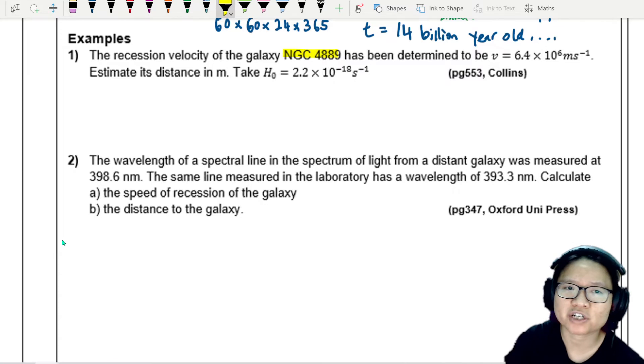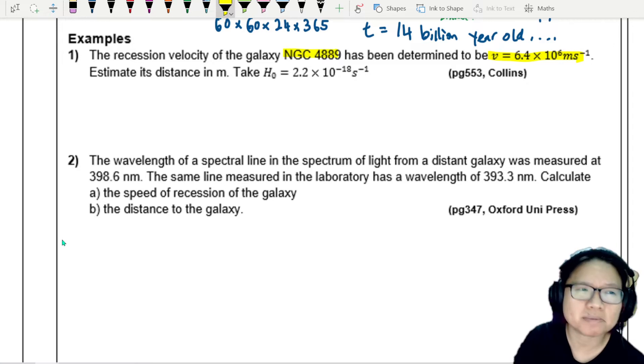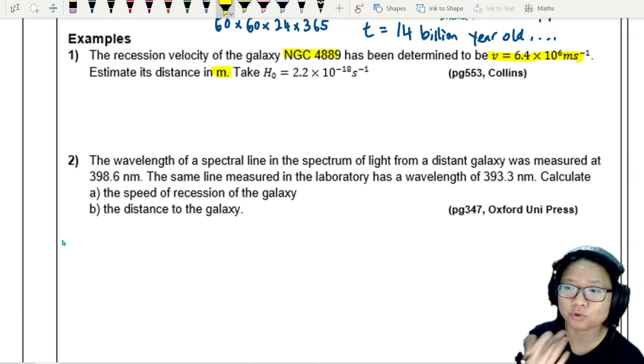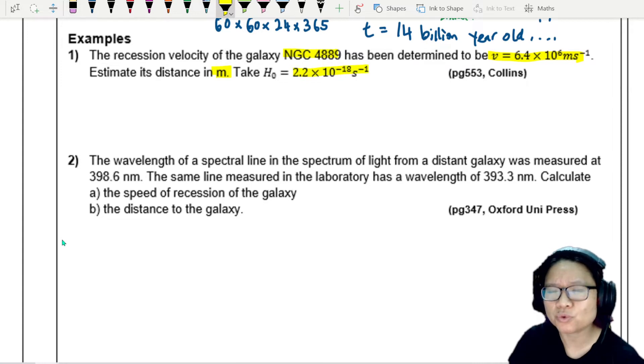We know the recession velocity given is 6.4 times 10 to the power 6 meter per second. Estimate the distance in meters. We're not going to use luminosity because it feels very far away. You are asked to take the Hubble's constant as 2.2 times 10 to the power negative 18 per second.